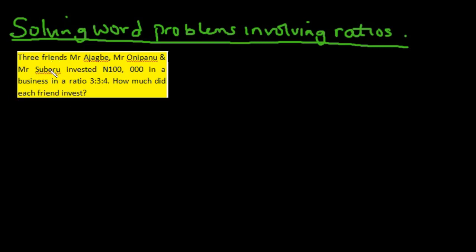For this example, we have three friends: Mr. Ajakbe, Mr. Unipan, and Mr. Suberu. They invested one hundred thousand naira in a business in a ratio of three to three to four. This is read as three ratio three ratio four. How much did each friend invest?